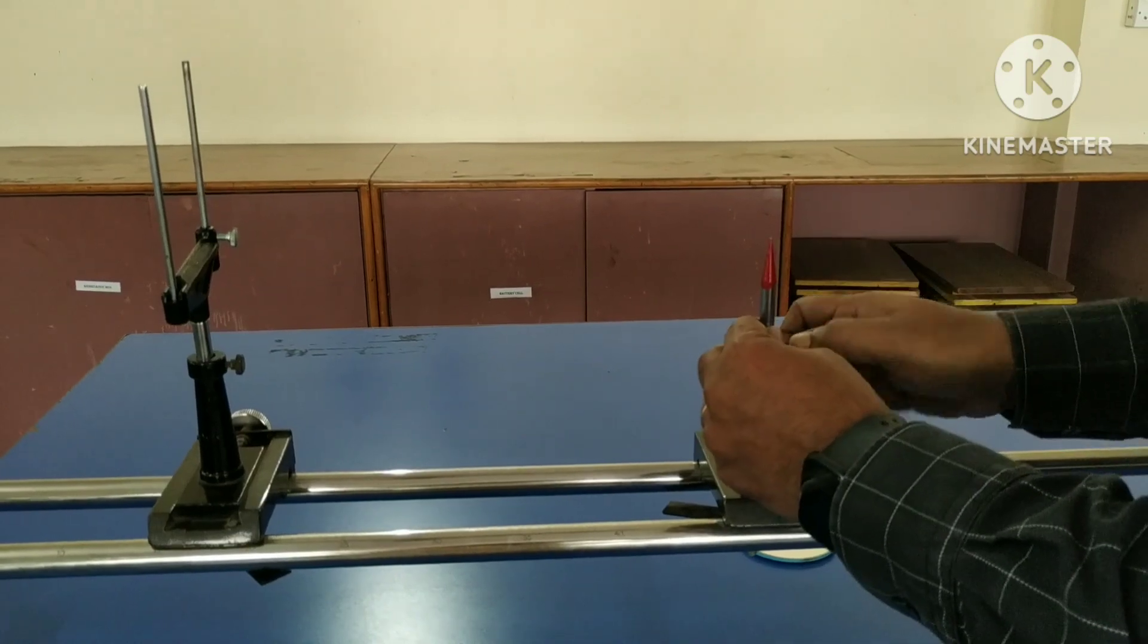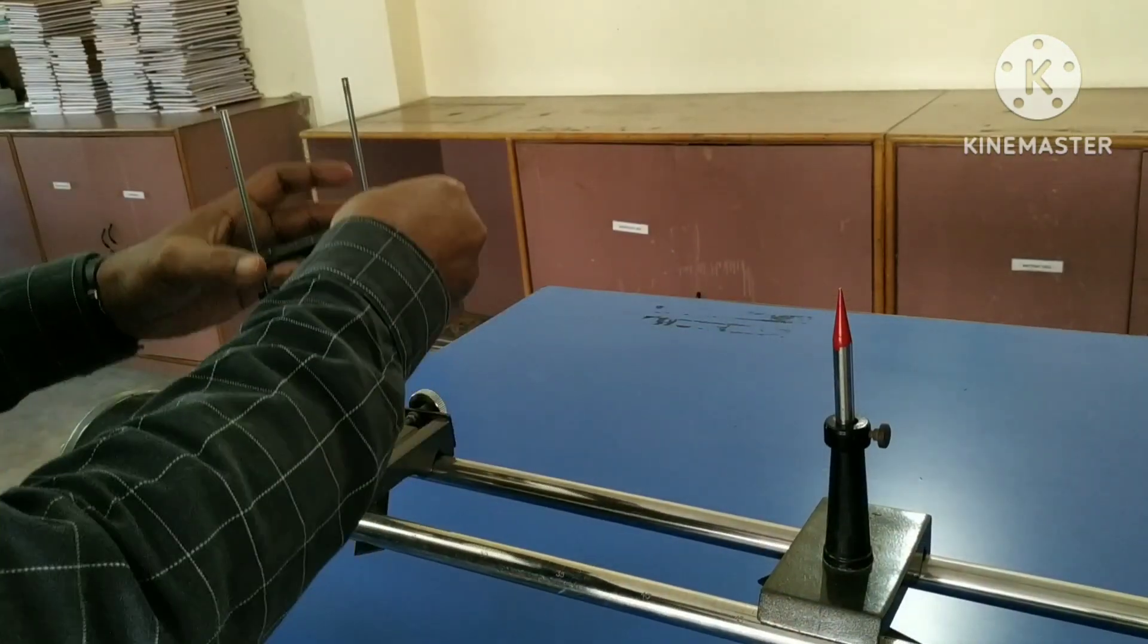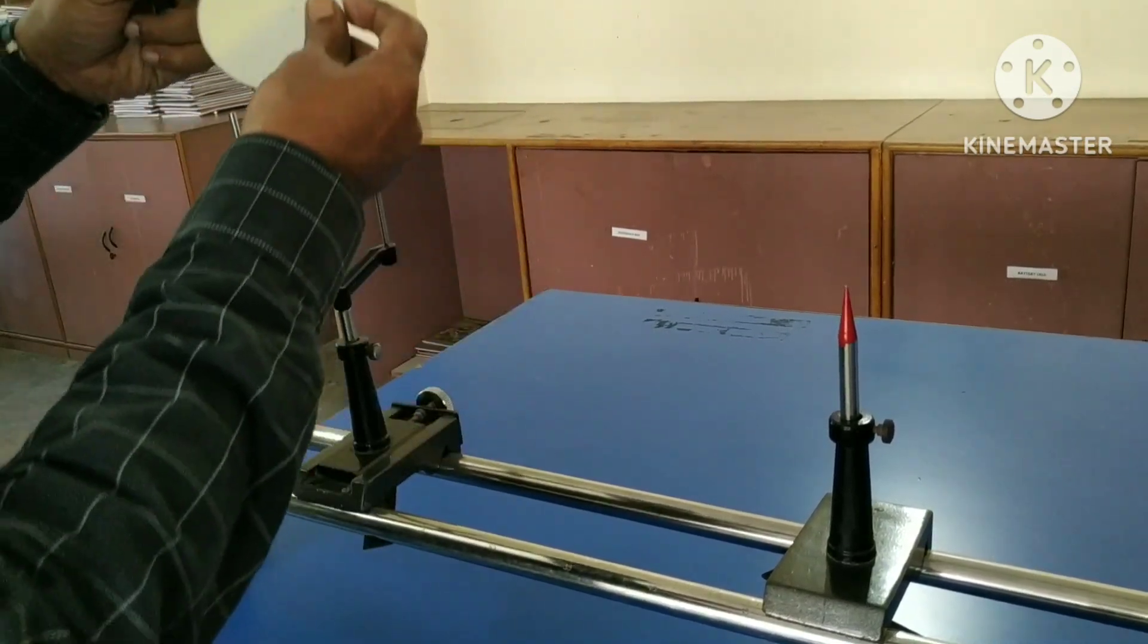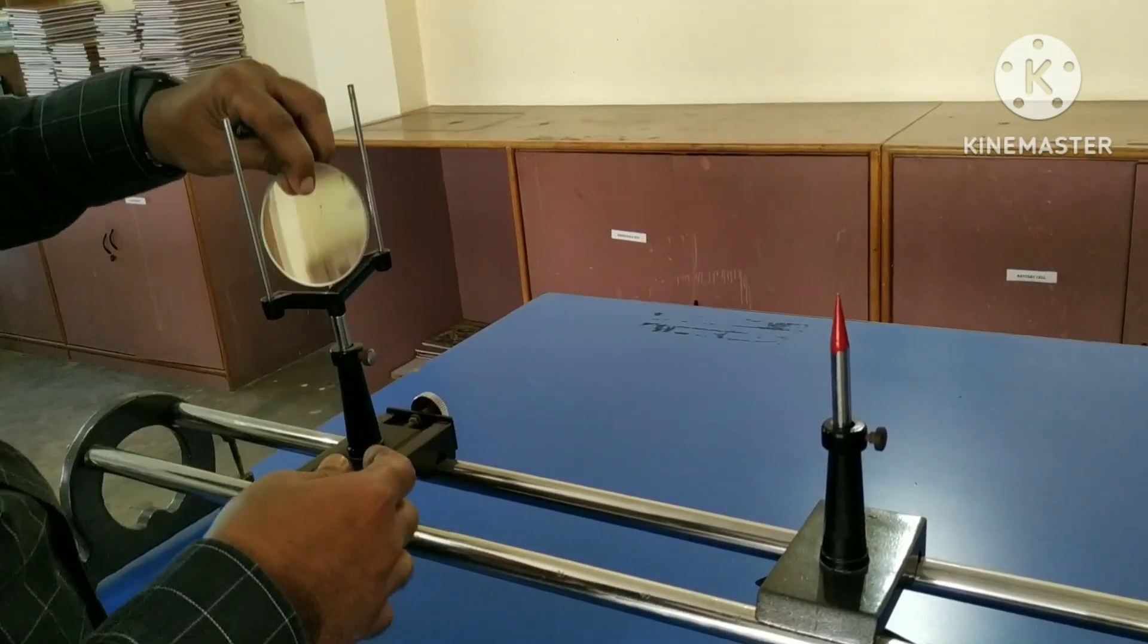The optical bench is provided with a pin stand and a mirror holder. Let us mount the concave mirror vertically on the mirror holder.